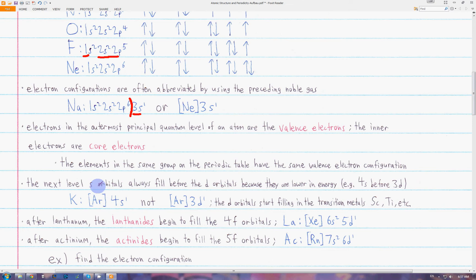The electron configuration of potassium is—we use the argon to abbreviate, and then the last electron goes in the 4s subshell, not the 3d subshell as you might expect.